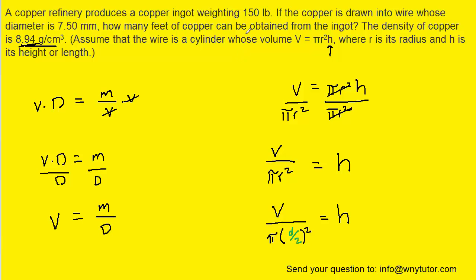And the question gives us essentially a mass of 150 pounds and then the density. The problem here is that these units are inconsistent. We have the mass in terms of pounds and then we have the density in terms of grams. So our challenge becomes to get those units to be consistent with one another.